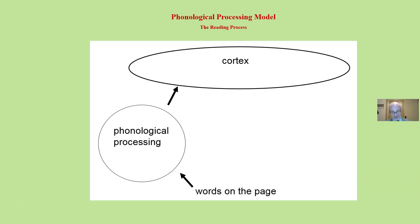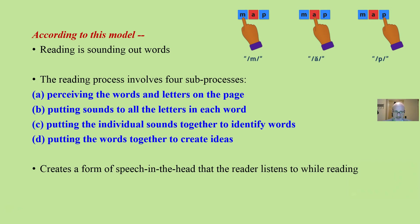The phonological model describes the reading process thusly. You see the words on the page, they go up into the thalamus in phonological processing, and then it goes to the cortex. According to this model, reading is sounding out words, and the process involves four sub-processes. You perceive the words and letters, you put sounds to the letters, you put the individual sounds together to identify or create words, and you put the words together to create ideas. This happens instantaneously, and it creates a form of speech in the head that the reader listens to while reading.